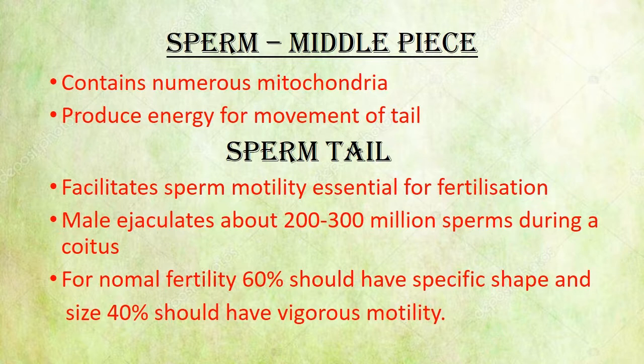The middle piece contains numerous mitochondria. These mitochondria provide energy for the movement of the tail. This facilitates sperm motility.